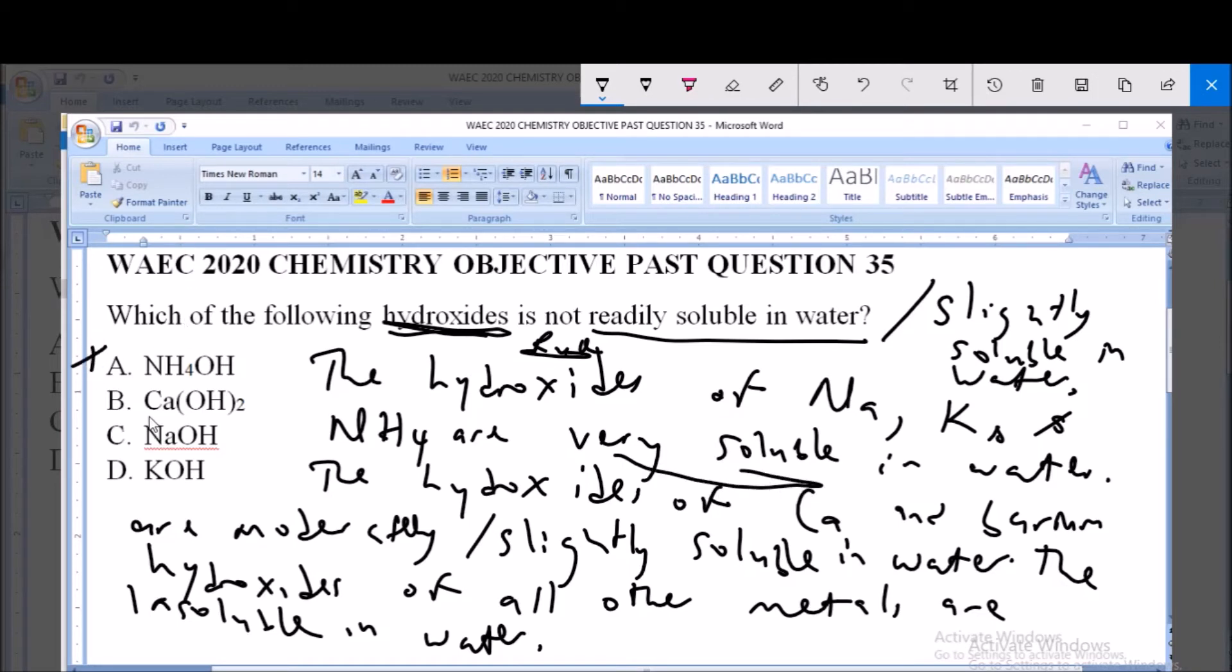Now we said the hydroxides of calcium, as we have calcium hydroxide in option B, are slightly soluble in water. So option B is calcium hydroxide. This is slightly soluble, and so you can't really say it is readily soluble. So it is not readily soluble in water.